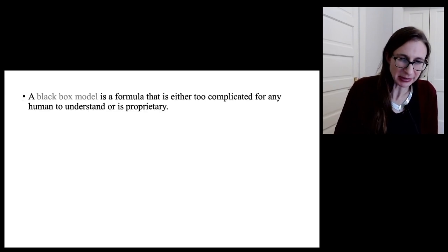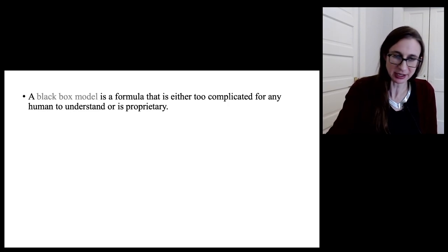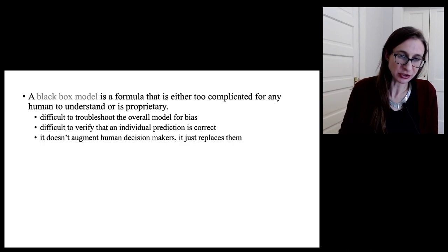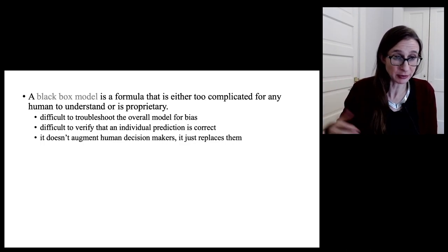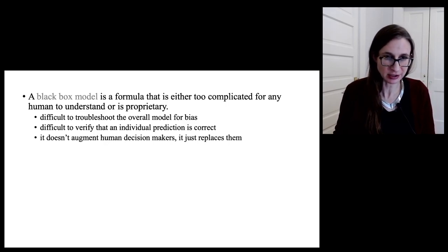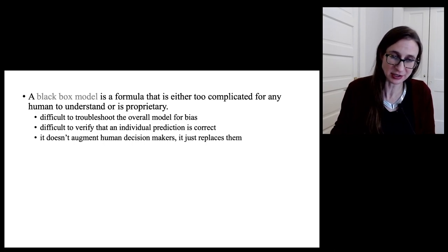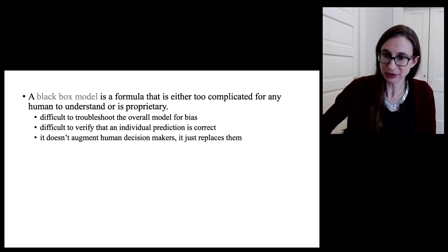So some definitions. A black box model is a formula that's either too complicated for any human to understand, or it's proprietary. These models can be difficult to troubleshoot, difficult to troubleshoot the overall model for bias. It can be difficult to verify that an individual prediction is correct, and these models don't augment human decision makers — they just replace them, because the human has to decide whether to trust it without knowing what it's actually doing.